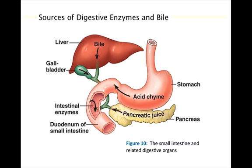Two large organs, the pancreas and the liver, contribute to digestion in the small intestine. The pancreas produces pancreatic juice — a mixture of digestive enzymes and an alkaline solution rich in bicarbonate — which neutralizes the acidity of chyme as it enters the small intestine. The pancreas also produces hormones that regulate blood glucose levels. The liver produces bile, which contains salts that emulsify fats, making it easier for enzymes to catalyze. The gallbladder stores bile until it is needed in the small intestine.